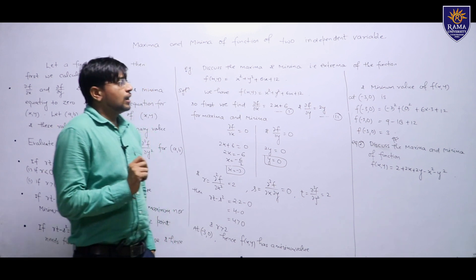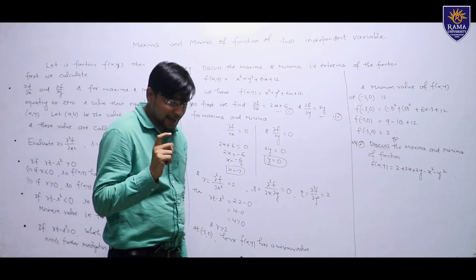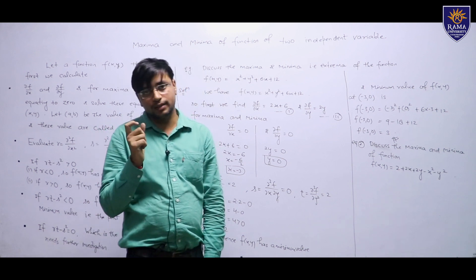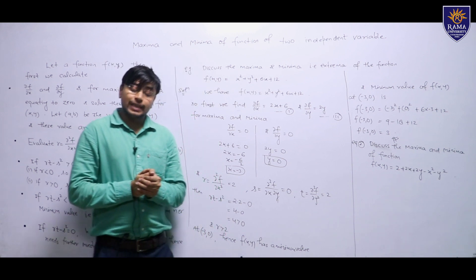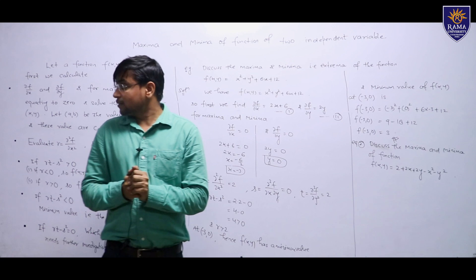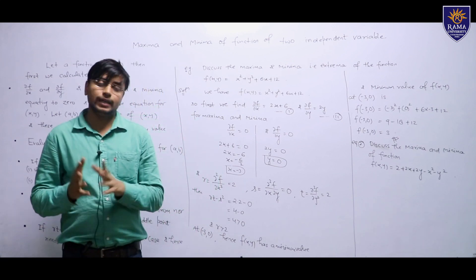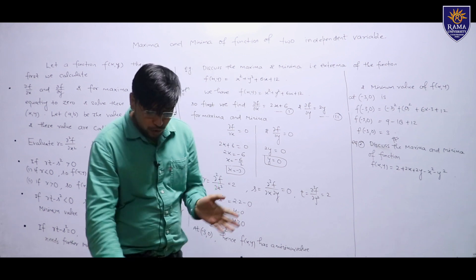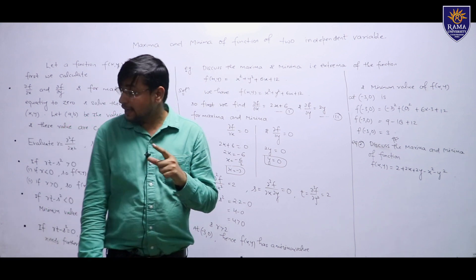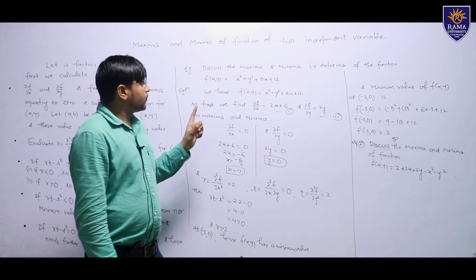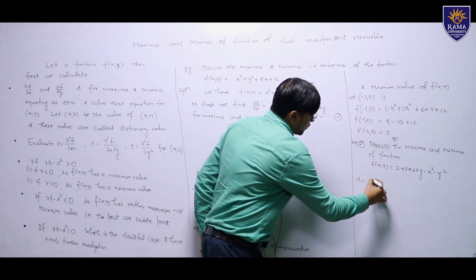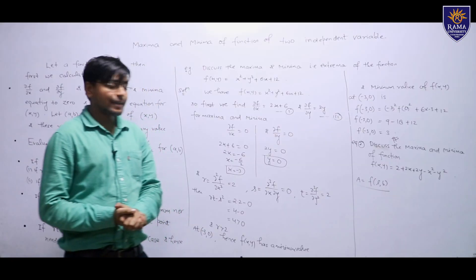The concept of a function of several variables arises, for example, with the area of a rectangle. The area of a rectangle depends on two variables: length and width. If the length changes, the area also changes. Therefore, the area of a rectangle is a function of length and width.